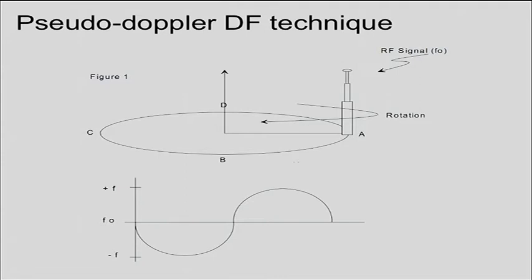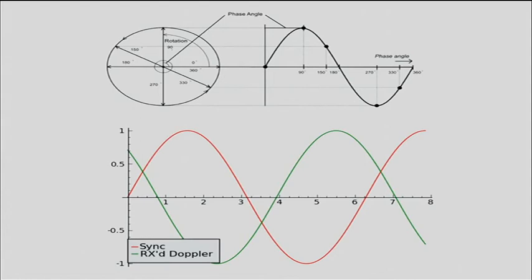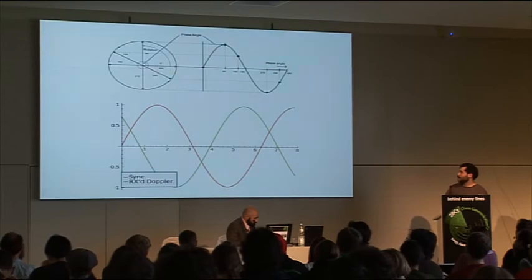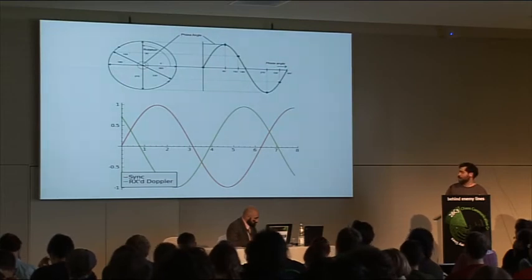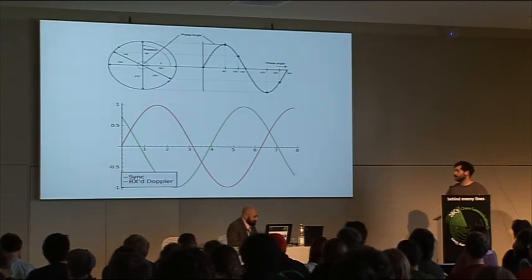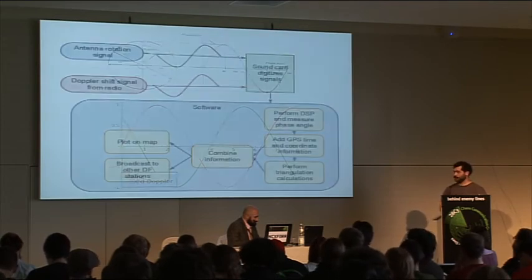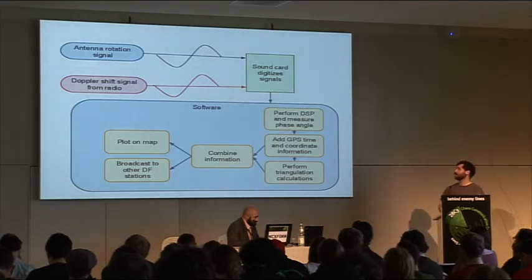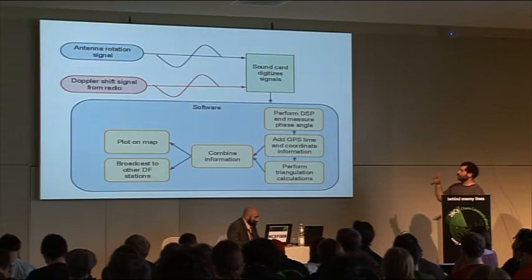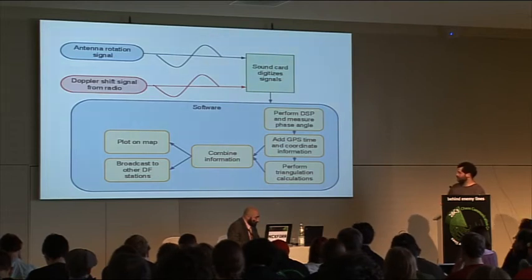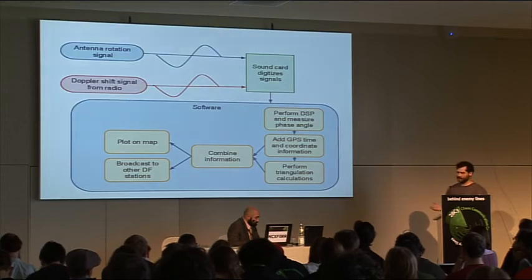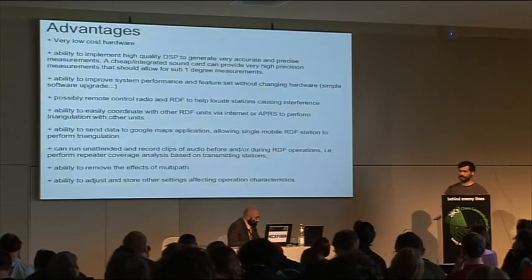If you know where the antenna is, your received signal will have two components: your antenna angle and your received signal. You measure the phase angle, and that tells you the angle relative to the receiver that the transmitter is at. You do this repeatedly, averaging your measurements and doing some filtering. So basically, you have your antenna rotation signal, your Doppler shift — you run that into your sound card, measure the phase angle, do some DSP, get GPS coordinates, do triangulation, combine and plot, and coordinate with other stations or your own logs.